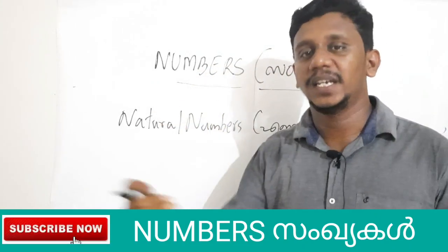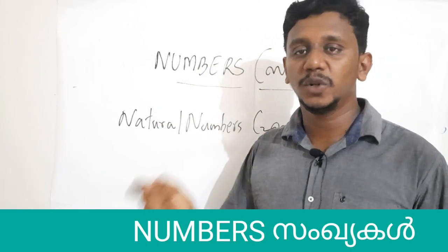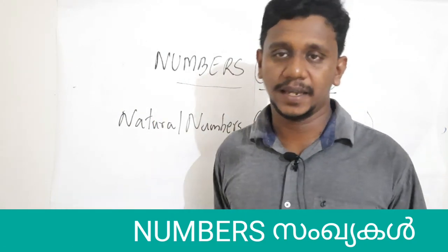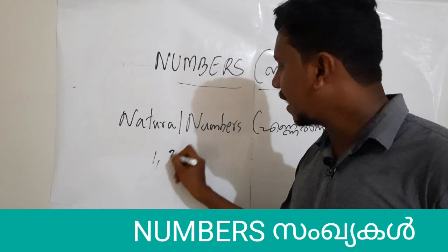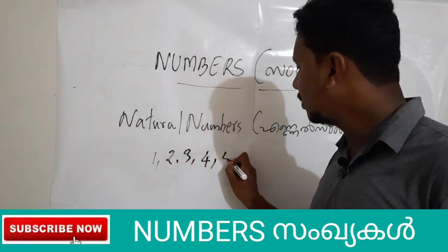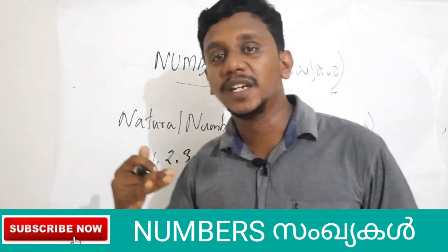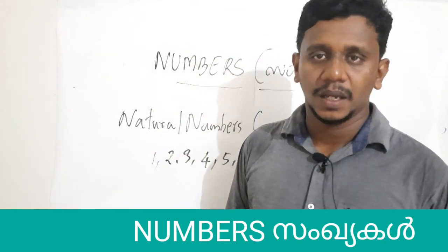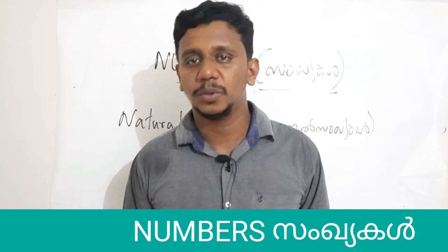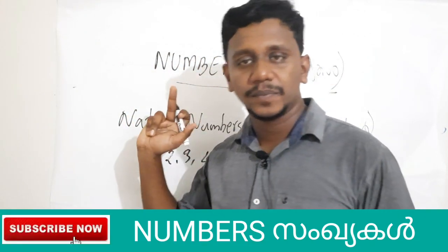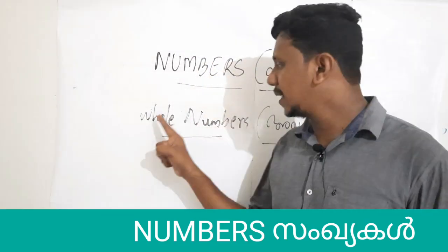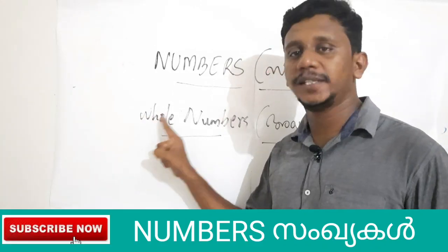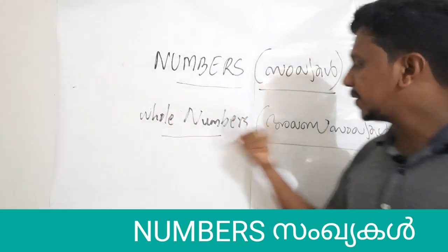The natural numbers are: 1, 2, 3, 4, 5, 6, 7, 8, 9, 10 and so on.